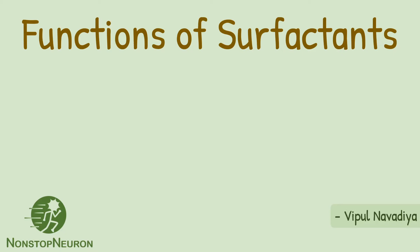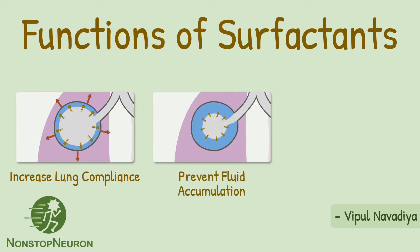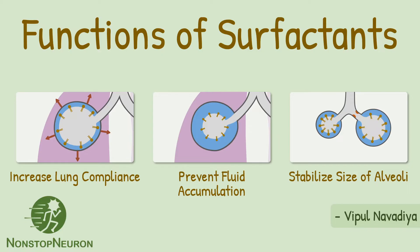In this video we will see the functions of surfactants in the respiratory system. There are three main functions of surfactants: they increase compliance of lungs, prevent fluid accumulation in alveoli, and they stabilize the size of alveoli. Let's see each function one by one.